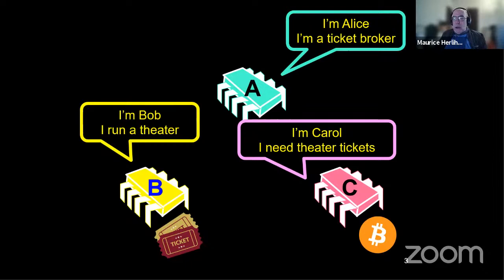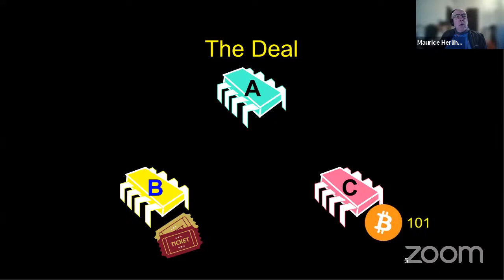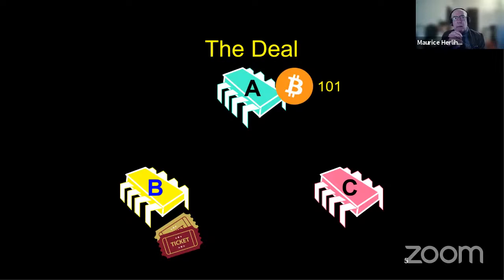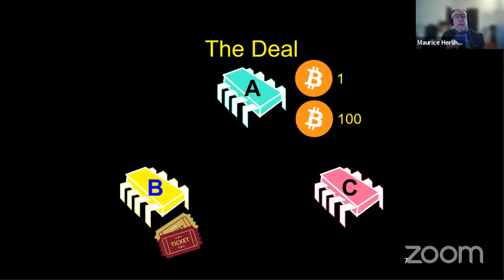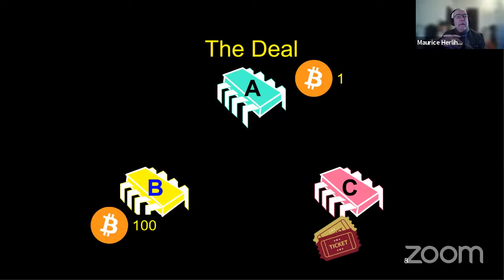And so our goal here is to set up a deal where Carol pays 101 coins to Alice, the broker. Alice takes her commission and forwards the 100 coins to Bob, who then sends the tickets to Carol. So this is an indirect transfer, where Bob and Carol don't necessarily know about each other directly, they both interact through Alice. And this is the way a lot of commerce in the real world is done. So it's not a direct transfer.